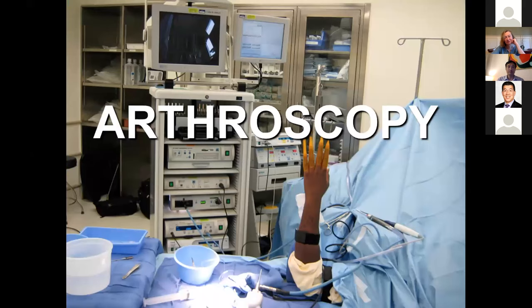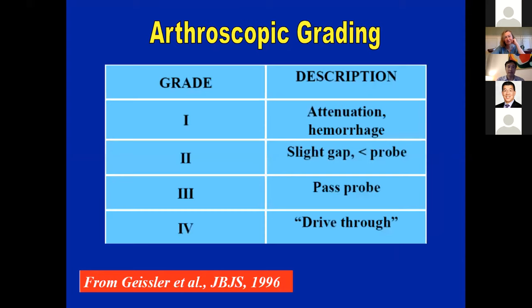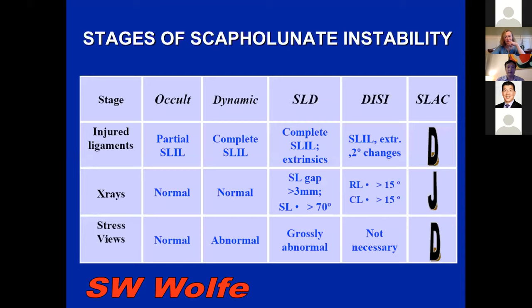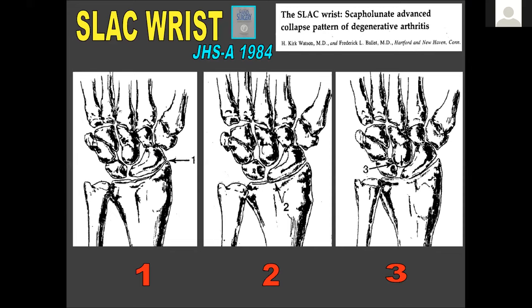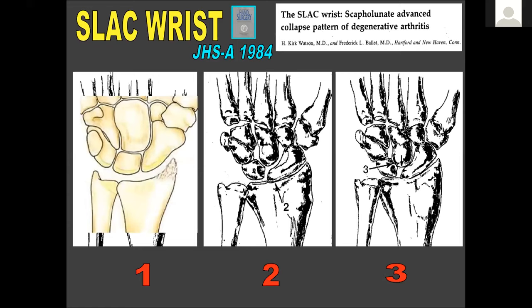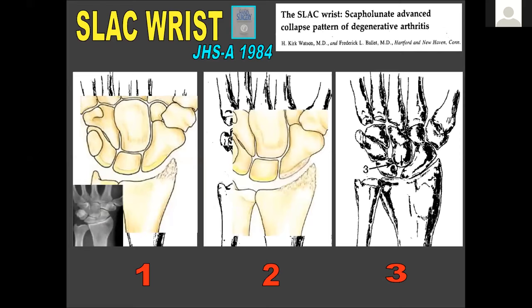You want to avoid the scapholunate advanced collapse wrist — this is a degenerative condition if you do not address the scapholunate problem. With a lot of instability, the first stage of arthritis involves the radial styloid area, second is the radioscaphoid, and third is the mid-carpal joint. Regarding chronicity: acute is under six weeks, chronic is over three months — somewhat arbitrary but generally accepted.